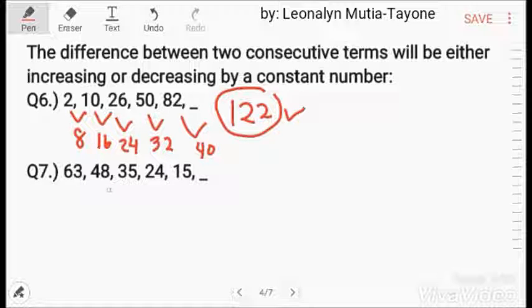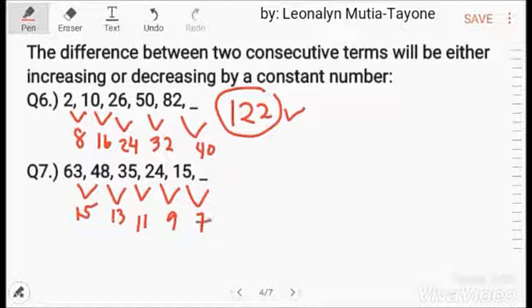Next, here the difference between the two terms are 15, this is 13, 11, 9. So, the difference is decreased by 2. So, the next difference will be 7. Then, 15 minus 7 equals 8.